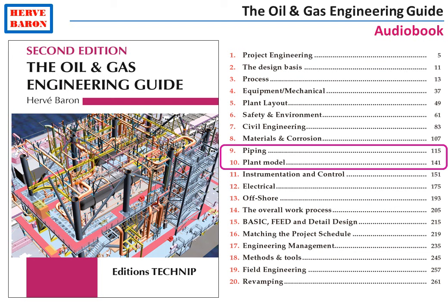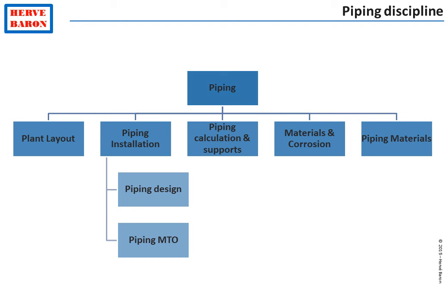Welcome to chapters 9 and 10 of the oil and gas engineering audiobook. These chapters describe the work of the piping discipline. Pipe work is the most common critical path of oil and gas projects. It is therefore very important to understand the sequence of work of piping discipline, which is the purpose of these two chapters. Piping discipline groups a number of specialties, two of which we have already covered in dedicated modules: plant layout, and materials and corrosion.